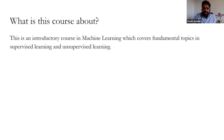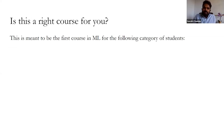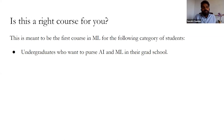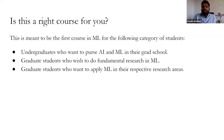So what is this course about? This course is an introductory course in machine learning, covering fundamental topics in supervised learning and unsupervised learning. This is meant to be the first course in machine learning for undergraduates who want to pursue AI and ML in grad school, for graduate students who wish to do fundamental research in machine learning, for graduate students who want to apply machine learning in their research areas, and for engineers who will build machine learning solutions.